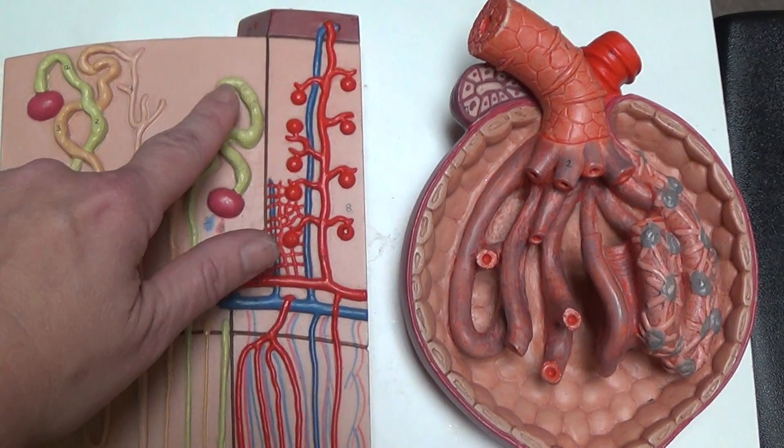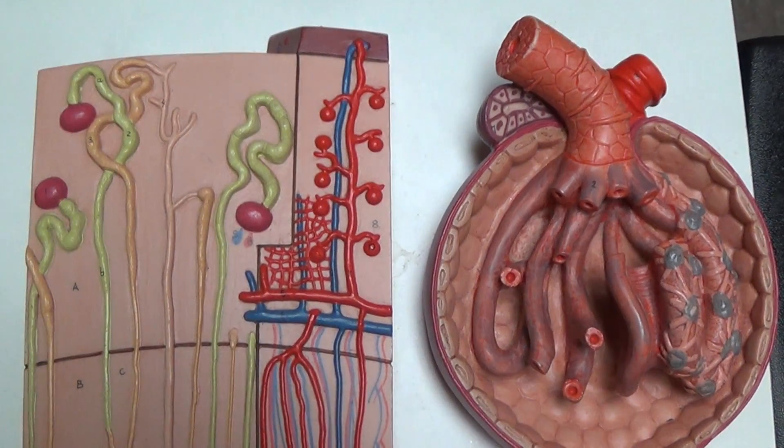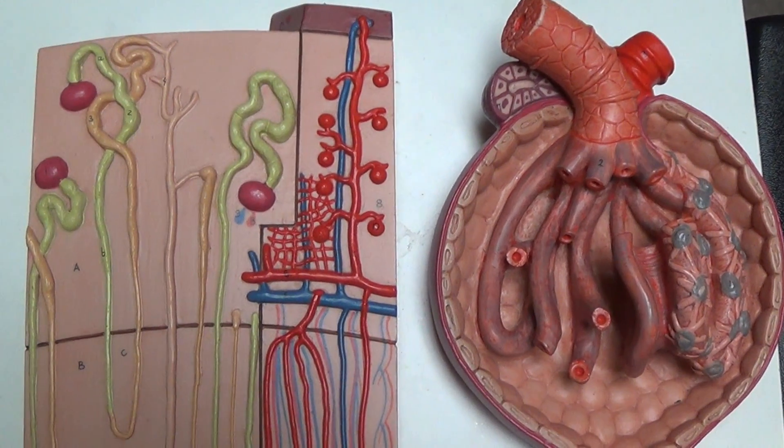The first part of the tube, which we see in green here, is the proximal convoluted tubule, also called PCT.